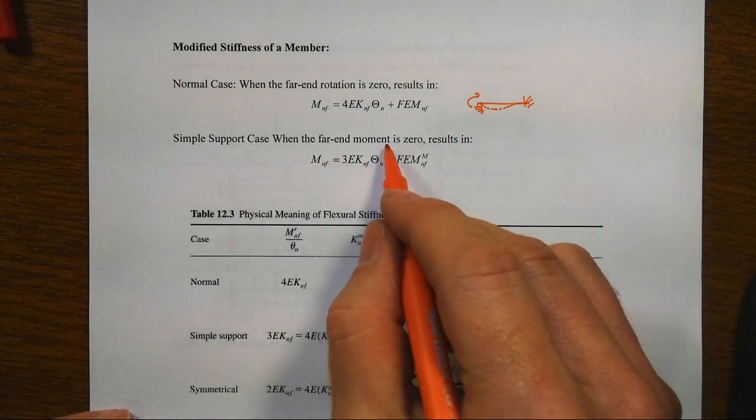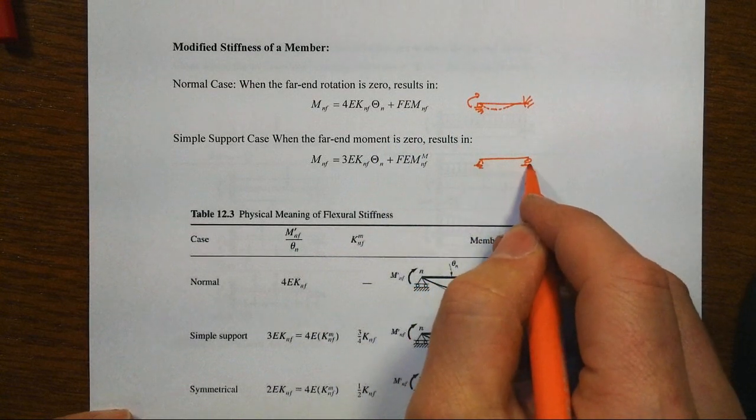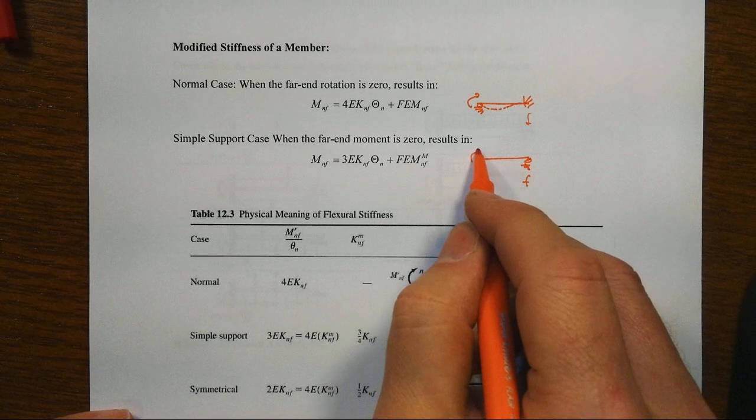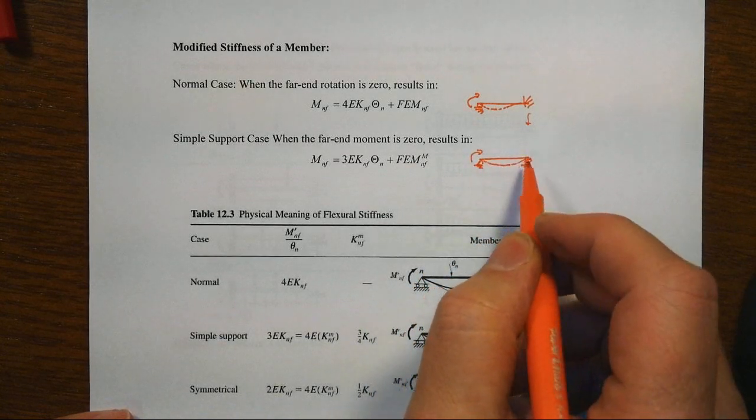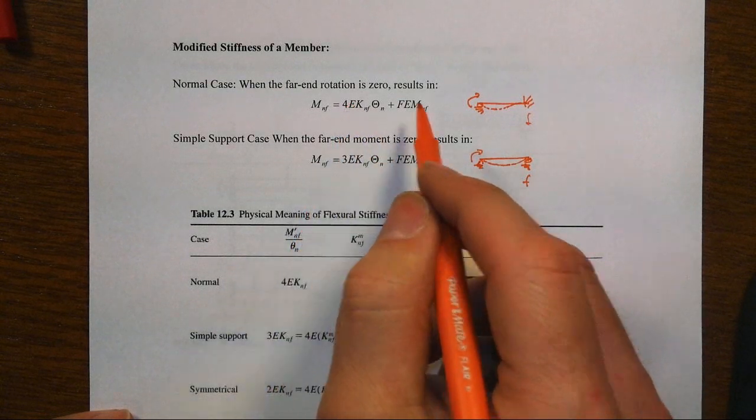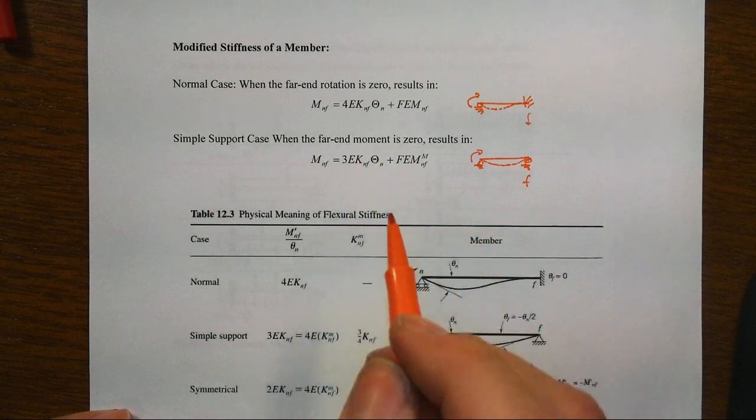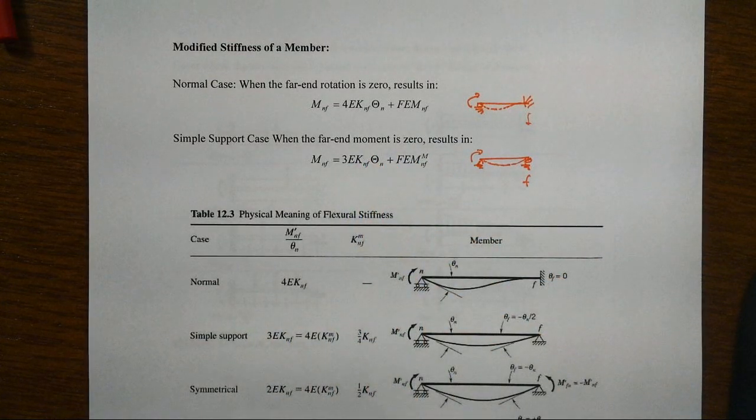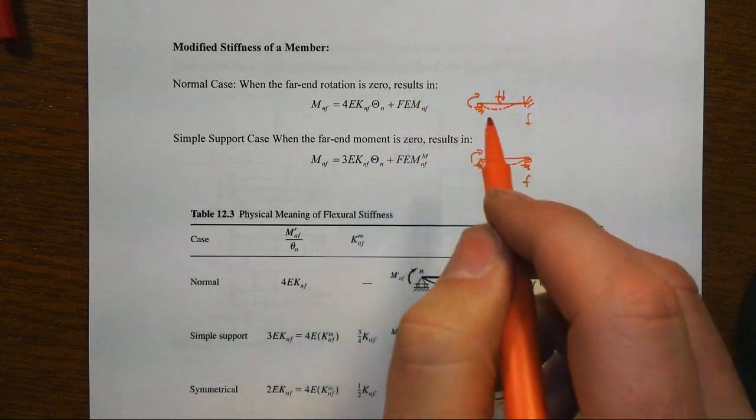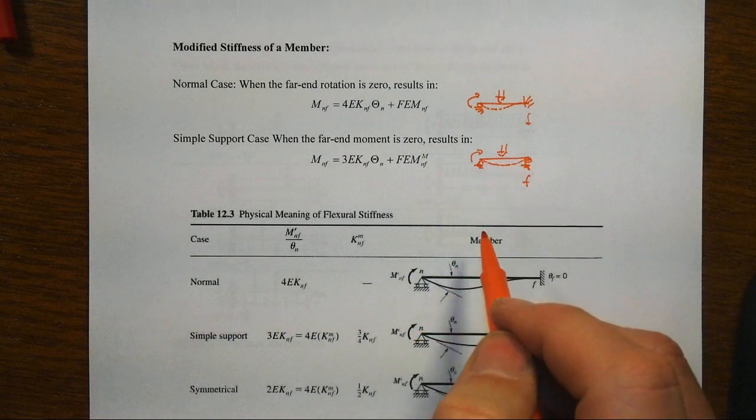But what if the far end moment is zero, not rotation? In other words, we've got that far end over here to the right that's zero, and we apply this moment. Well, that system is not as stiff as the first one, and indeed it's a ratio here of four to the stiff one, three to the less stiff one, or in other words, that's three quarters the regular stiffness. Now, if we have member loads on there, remember that creates the fixed end moments. Fixed end moments here will be different as a result.